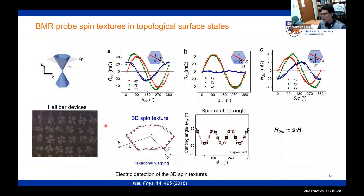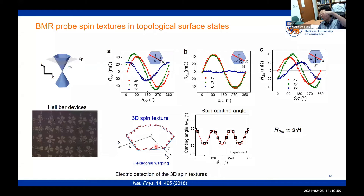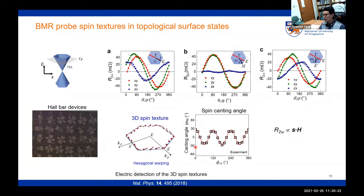By combining in-plane and out-of-plane magnetic field measurements, we can find the three-dimensional spin texture. We can apply current along different crystalline directions, making many different Hall bars on one chip. From the spin-dependent band structure, we expect three-fold symmetry in out-of-plane tilting. Summarizing data from various directions, we see nice three-fold symmetry coming from the topological insulator C3V symmetry. The maximum tilting angle is 30 or minus 30 degrees, matching very well with ARPES data. Electrical detection of 3D spin texture is possible using this bilinear magneto-electric resistance measurement.